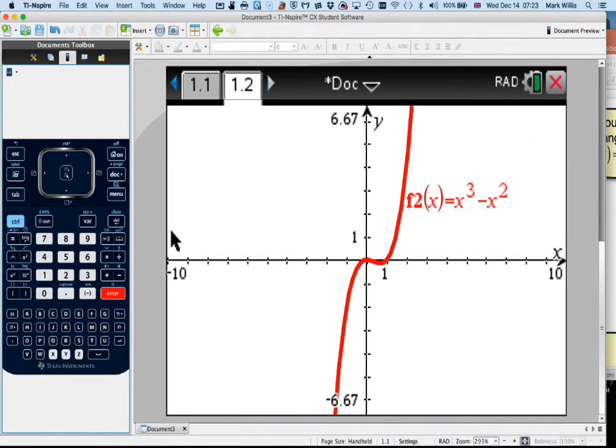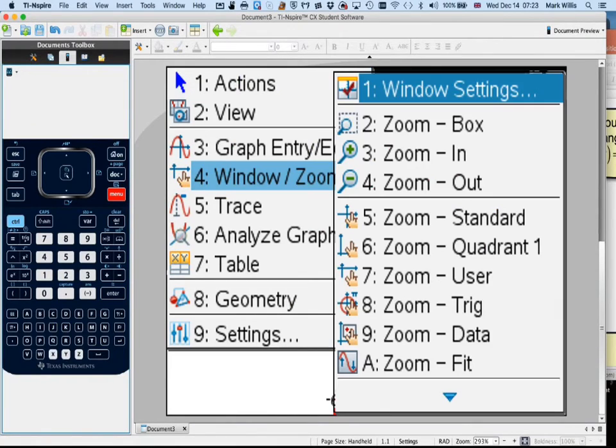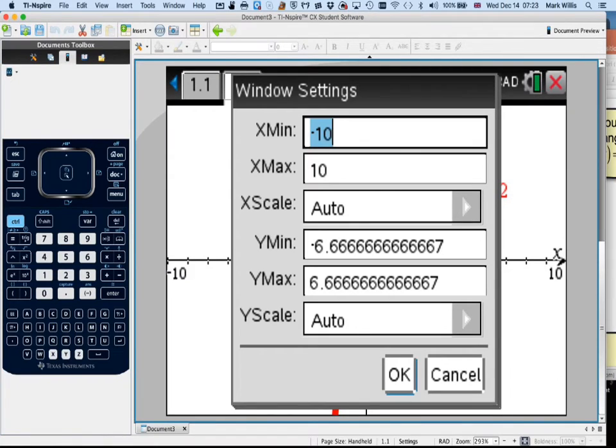What we're going to do is set our window, our x window. So go to menu, window, and go into window settings. It's going to go a little bit more than I need. So it's -3.5. I want to do -3 and 3.5. I'm not going to do anything to the y window yet. I'm just okay.